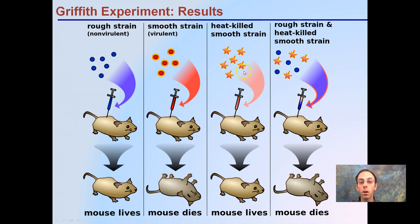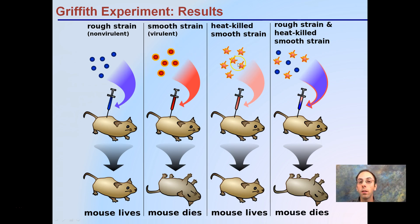However, if we take the smooth strain and heat-kill it — put it in boiling water so the proteins denature and the shape changes — and inject this heat-killed smooth strain into a mouse, it ends up living. We've basically removed the virulence.